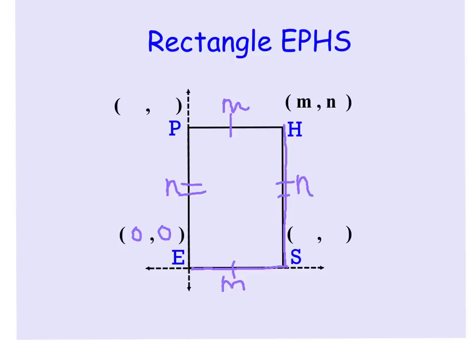If we move over here to S, because we're moving out M units but we're staying on the X axis, that's the point M zero. And for point P, because we are going straight up on the Y axis, that's going to be the point zero N.